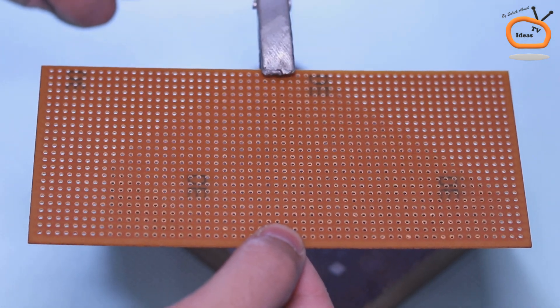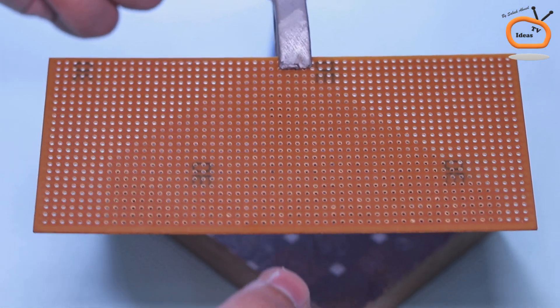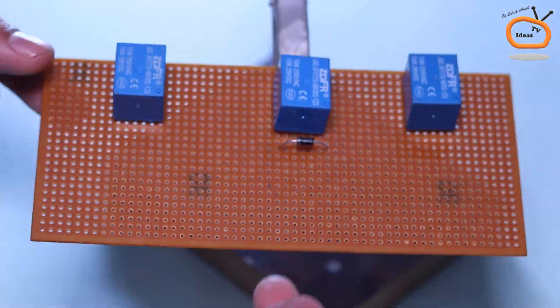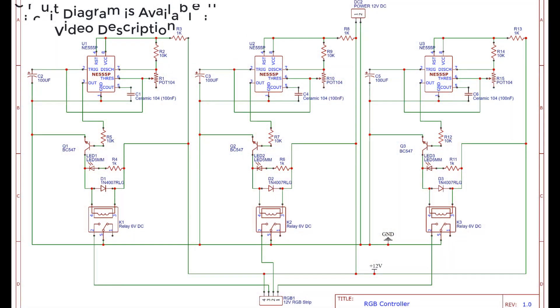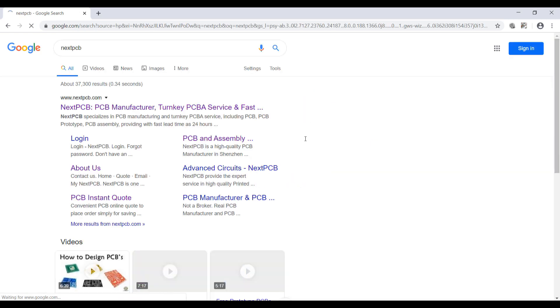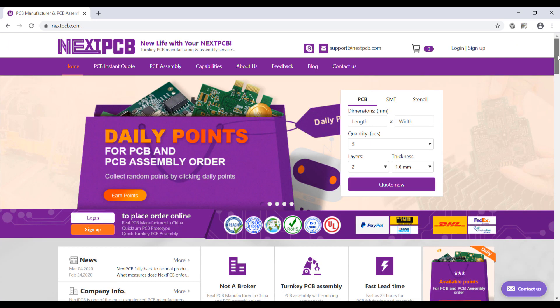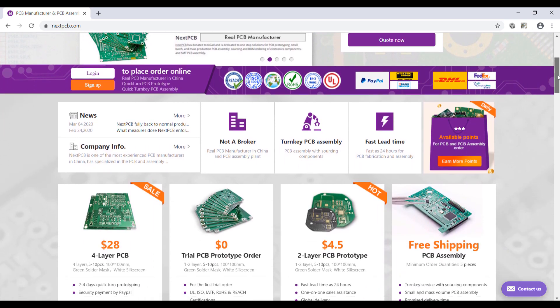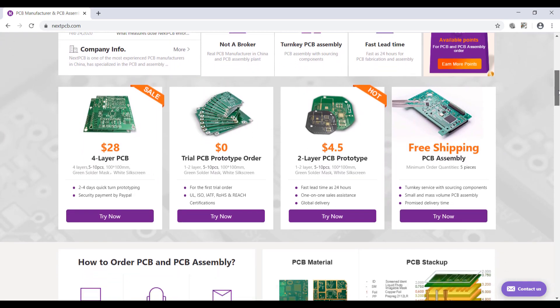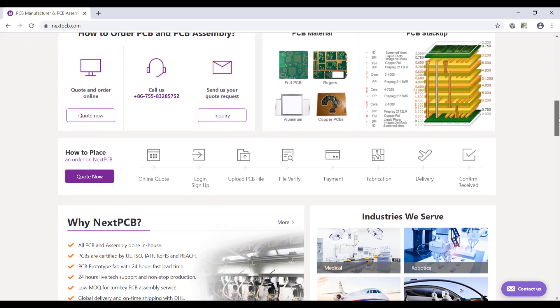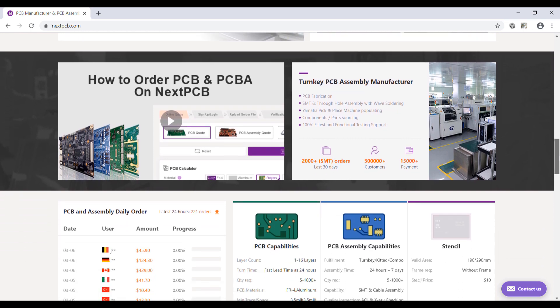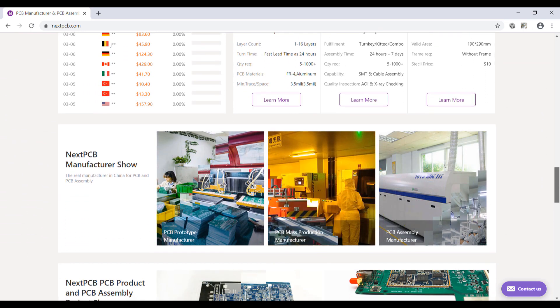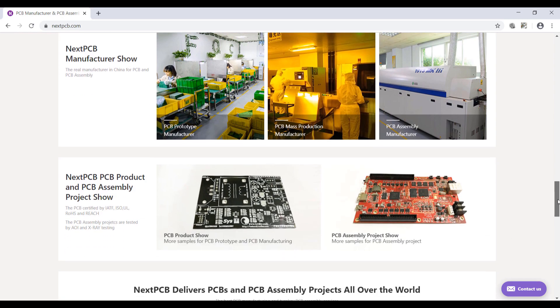Now I am going to connect all these components using zero PCB according to this circuit diagram. Making projects and connecting components on zero PCB is quite difficult. But don't worry, you can order your customized PCB online on NextPCB's website. NextPCB is one of the most experienced PCB manufacturers in China. They provide high quality PCBs with very reasonable price. They are also a sponsor of this video.